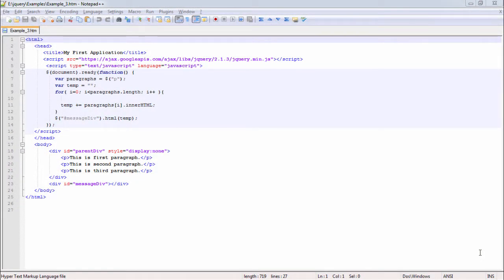In this example, we are covering selectors. So here we have a div, parent div and three paragraphs tags. Then in script, we are getting all these paragraphs using dollar p which is a selector. So that all paragraphs are getting selected. Now we have array of paragraphs.